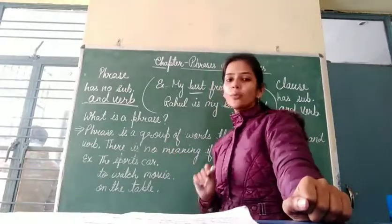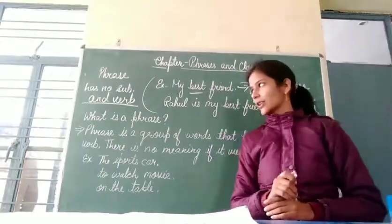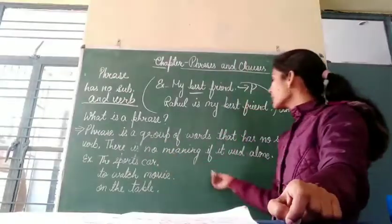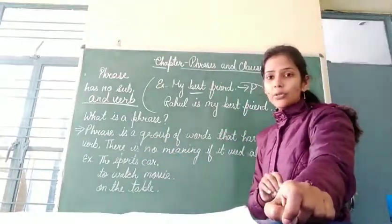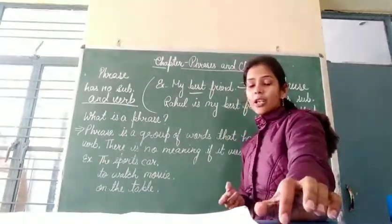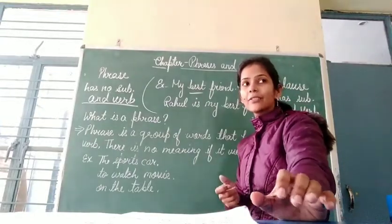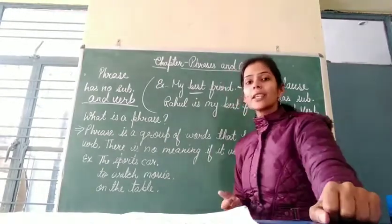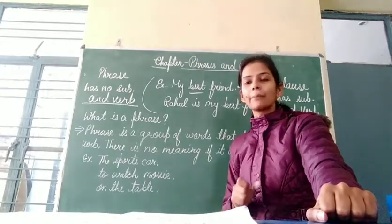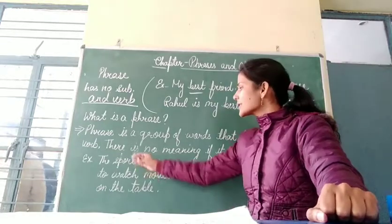A phrase is a group of words that has no verb and no subject. Those words are called a phrase, and there is no complete meaning when used alone. If you use a group of words without subject and verb, they will not give a complete meaning. This type of words is called a phrase.